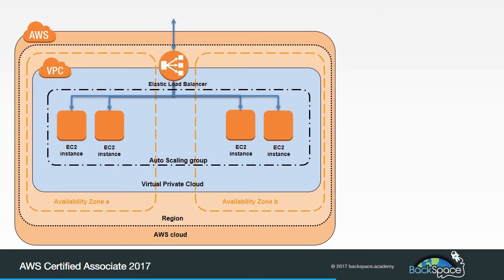We're first going to create a pretty complex environment — it'll look something like this — but we're going to use the Elastic Beanstalk service to do it, so it'll create all this for us. It's going to be a highly available and fault-tolerant environment with an Elastic Load Balancer and an auto-scaling group of EC2 instances, load balancing across multiple availability zones for high availability. We don't need to worry too much about it because Elastic Beanstalk will handle all of that for us.